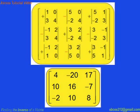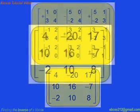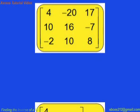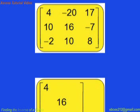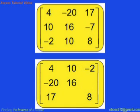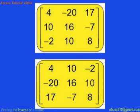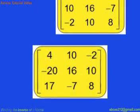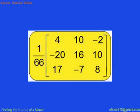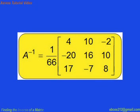Now we have to reflect the values about the diagonal — that is, transpose the cofactor matrix. We leave 4, 16, and 8 alone on the diagonal. The 10 and negative 20 switch spots, giving negative 20 and positive 10. The negative 2 and 17 switch spots, giving 17 and negative 2. The 10 and negative 7 switch spots. Then we multiply by 1 over the determinant, which is 1 over 66, to get A inverse. Distributing gives us 4 over 66, 10 over 66, and so on.